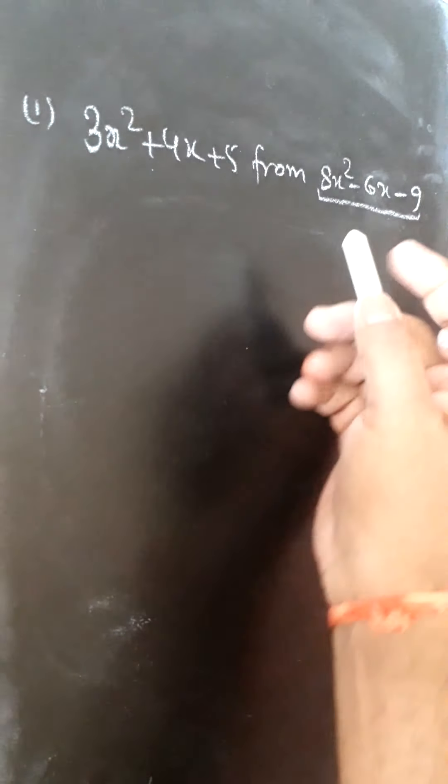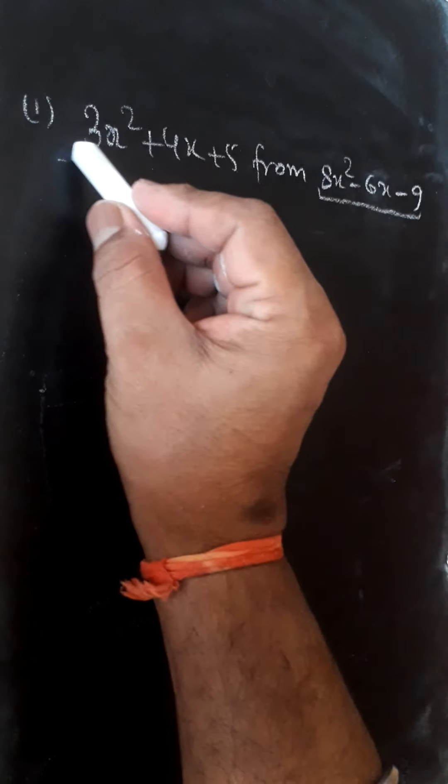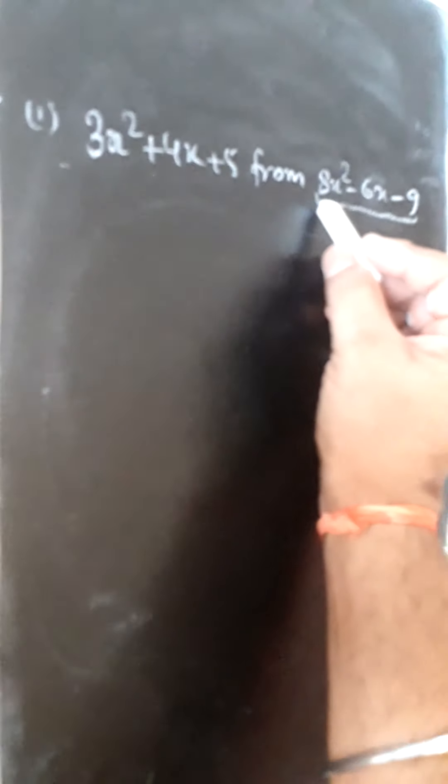This is subtraction of algebraic expressions by column method. Here we have to subtract 3x² + 4x + 5 from 8x² - 6x - 9.